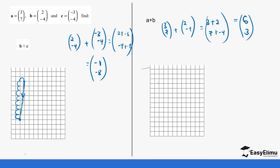So a plus b = (5, 3), and both values are positive. Starting from the origin we move five steps on the x-axis — one, two, three, four, five — then three steps upward on the y-axis — one, two, three. Our starting point is here and our final point is here, giving us this vector.